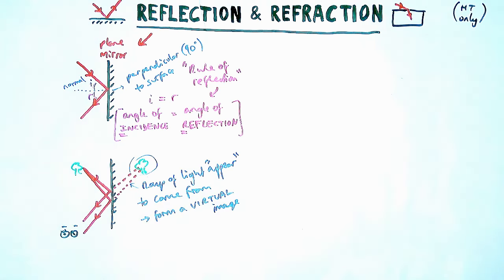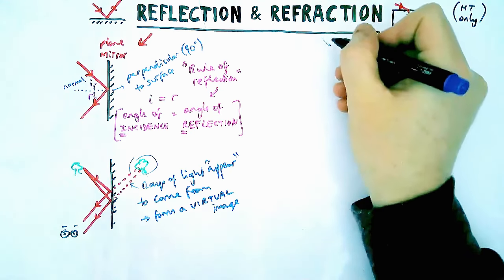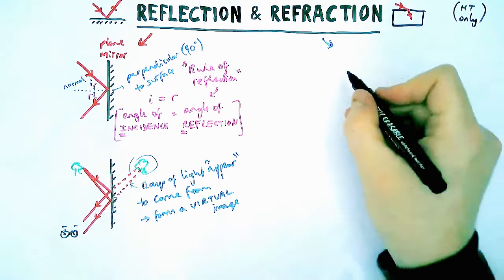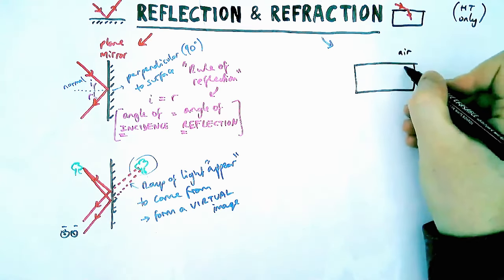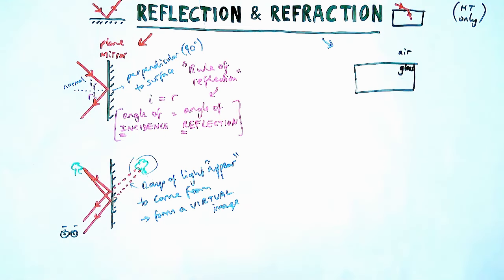Okay, let's talk about refraction then on the other side. So refraction doesn't talk about mirrors but it talks about light hitting other surfaces. Now a really common example for this is light going from air into glass. So let's find out what happens in this instance.